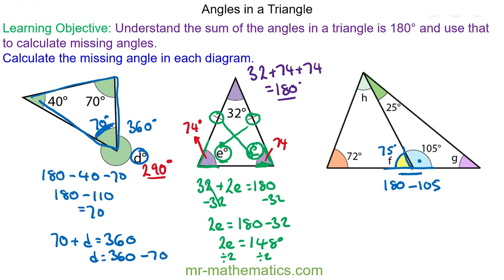And now I can work out angle H because I've got the three angles in a triangle. So angle H will be 180 take away 72 take away 75, which is equal to 33 degrees.